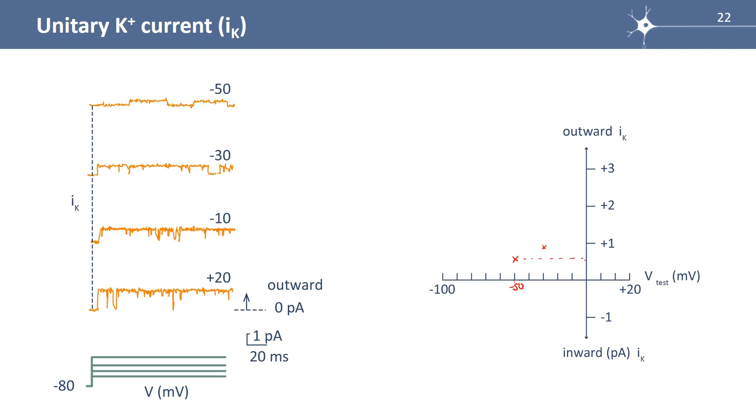At minus 10, it's a little more than 1 picoamp. Minus 10 here, you can see 1.5 or something like that. And at plus 20 here, it's nearly 2. And if we trace the curve, it's a straight line.